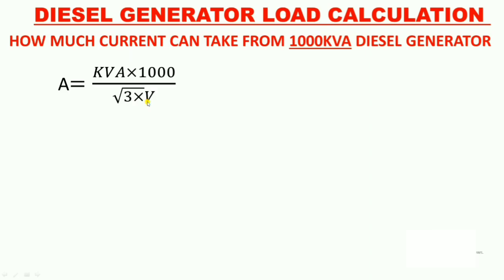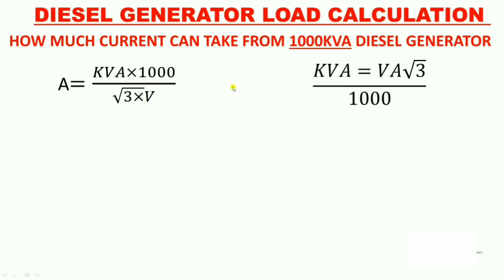First understand how this formula is derived. To derive this formula we need to understand kVA. VA is equal to V × A, and for kVA we divide by 1000, for three-phase supply we include √3. From this, kVA × 1000 cross-multiplied gives us amperes, with V and √3 in the denominator portion.